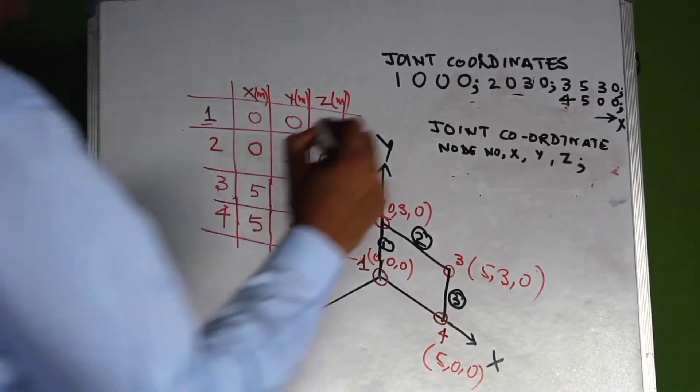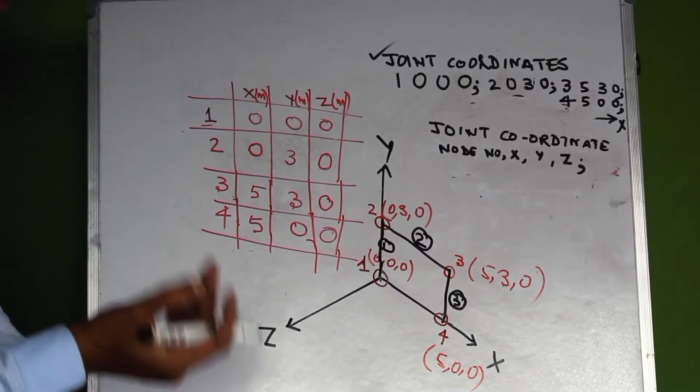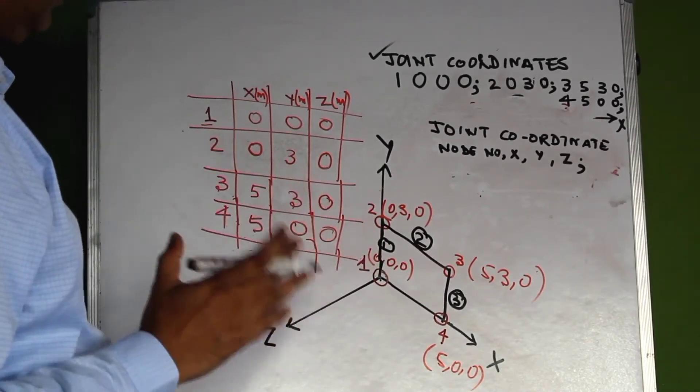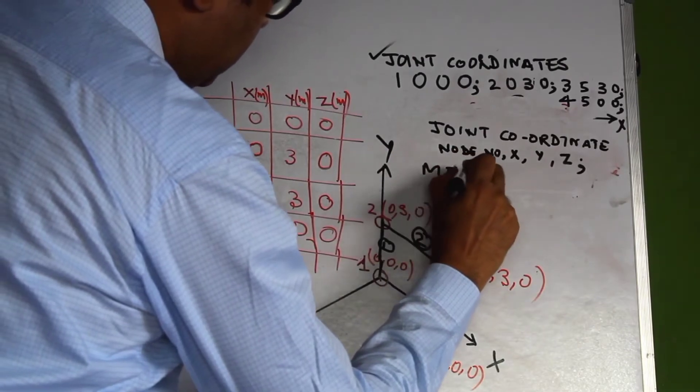We will continue with our example of the goalpost frame structure. In the last video we saw how to define the nodal coordinates in a table, and also how to define the same joint coordinates using the text format in STAAD. In this video we will learn about specifying members in the text format in STAAD, and that is called the member incidences. The command to define a member in STAAD is called member incidences.